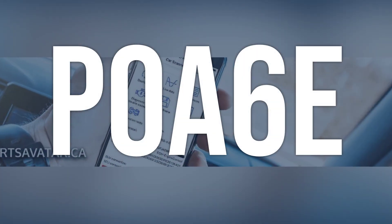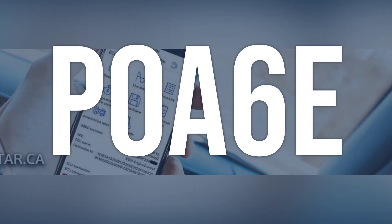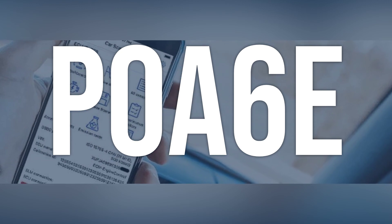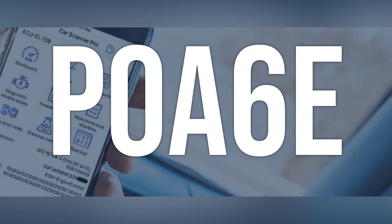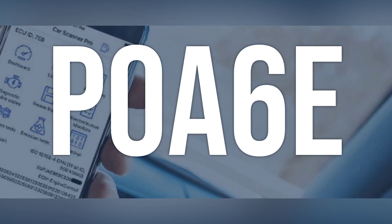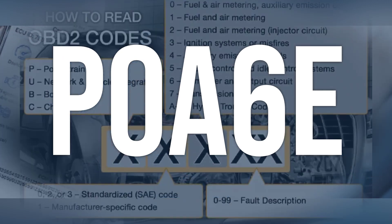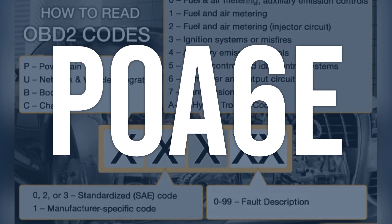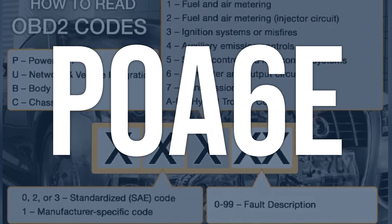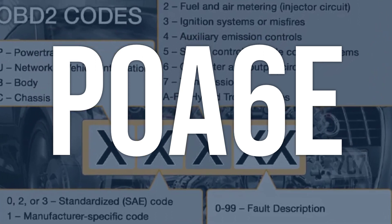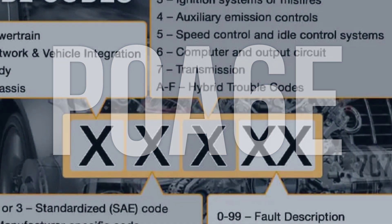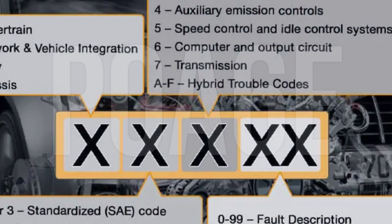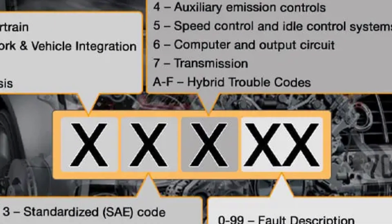The OBD2 fault code P0A6E means that the high-voltage system may not operate due to a drive motor B phase W current high. This code is triggered when the high-voltage control module detects a failure of the current monitoring sensors.